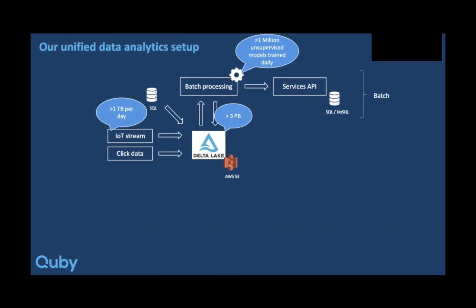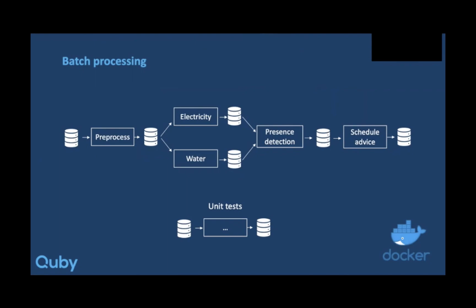Let's dig a little bit deeper into how the batch processing pipeline looks. We have the source data — the IoT data that we collect — we run some pre-processing and store it back to Delta Lake. From there we extract the different signals like electricity and water and store it back into Delta Lake. Then we may run some algorithms by combining multiple sources and store it back, and the cycle continues until the data is ready. Every transformation in this pipeline has the same structure: some data comes in, which can be one or more datasets, and a dataset comes out. This is perfect for unit testing.